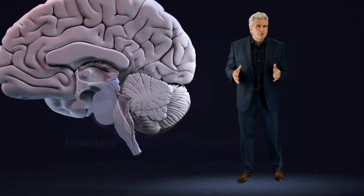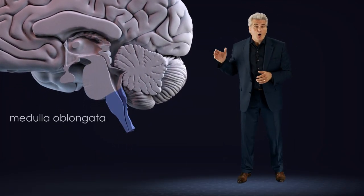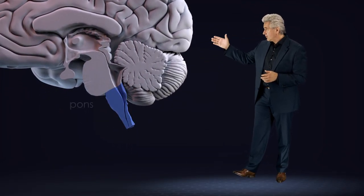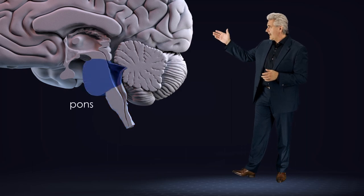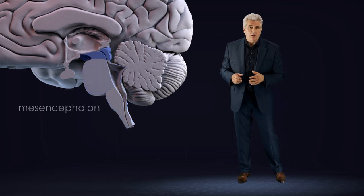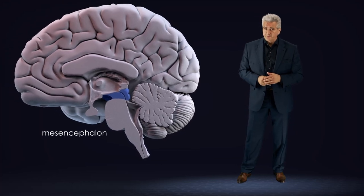The brainstem consists of the medulla oblongata, the pons, and the midbrain, also called mesencephalon.